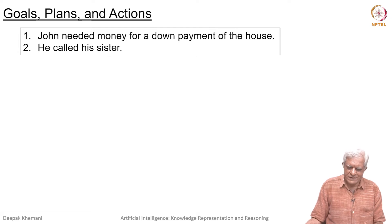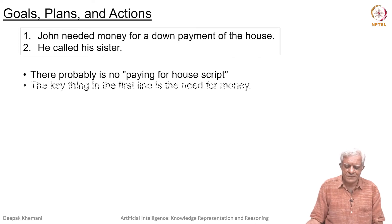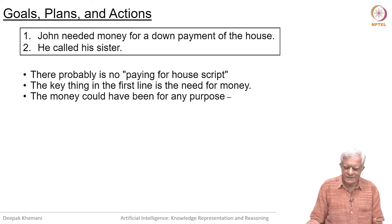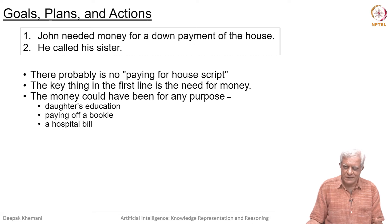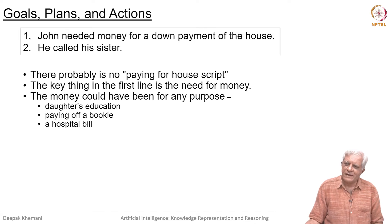Let us look at another two-line story. John needed money for a down payment on the house. He called his sister. There is probably no paying-for-the-house down-payment script. The key thing in the first line is that you understand there is a need for money — John has a goal of getting hold of some money. The money could have been for any purpose: a daughter's education, paying off a bookie, or a hospital bill. John has a goal of getting hold of some money and is trying to see what plans he can adopt to get that money.